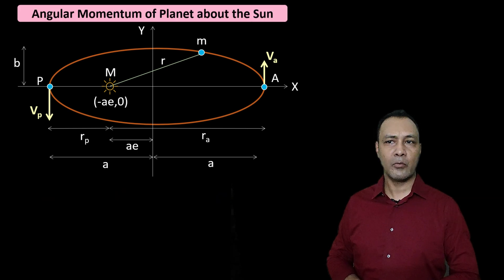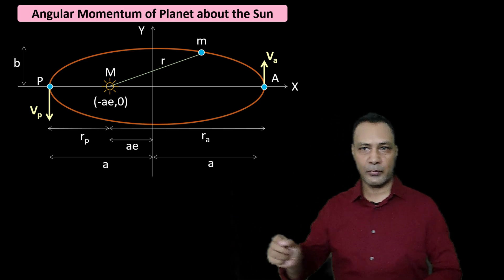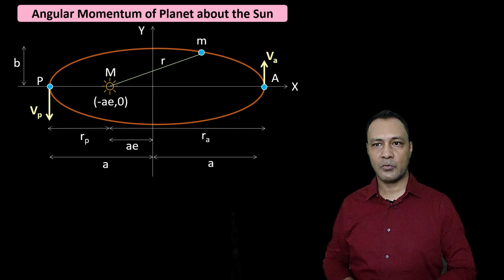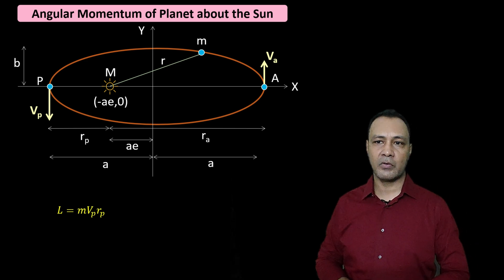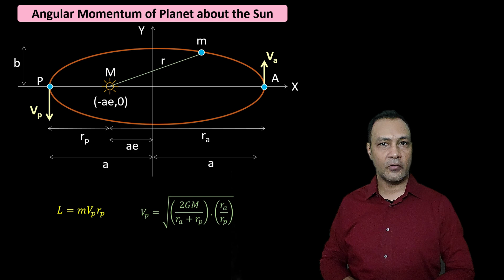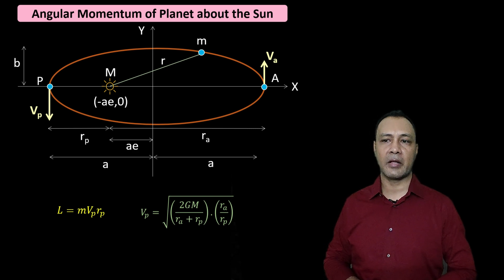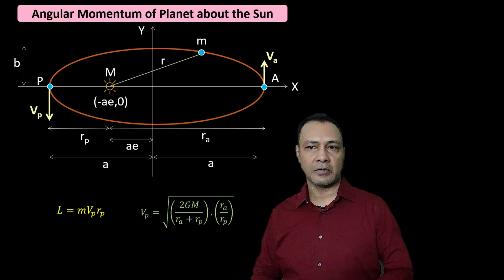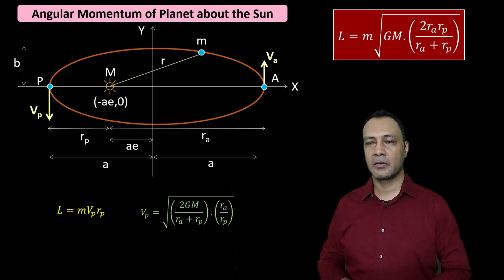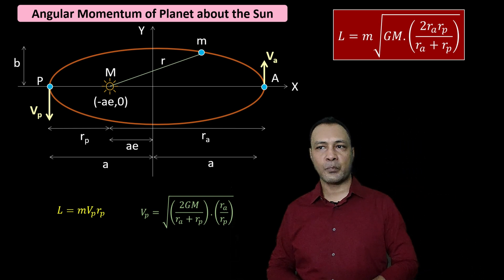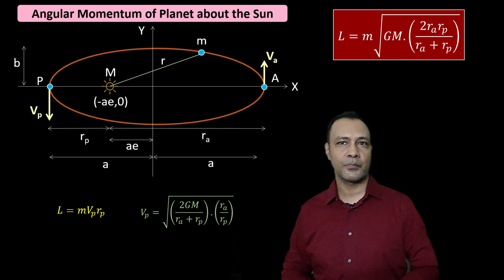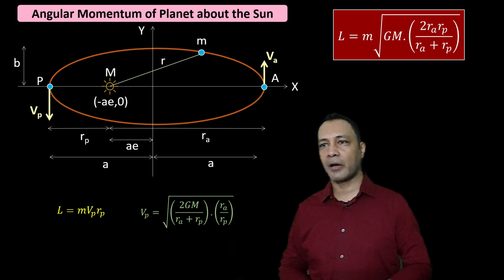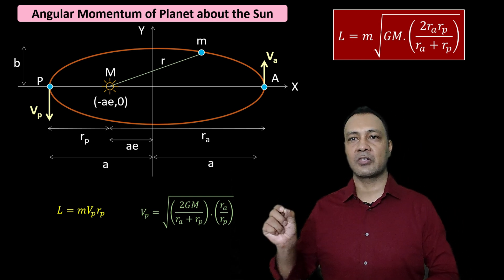Now, angular momentum of the planet about the Sun. Since angular momentum is conserved, I choose the perihelion point where L = m·Vp·Rp. Substituting the expression for Vp, we get L = m × √(2GM·Ra·Rp / (Ra + Rp)). The quantity 2·Ra·Rp / (Ra + Rp) inside the square root is the harmonic mean of Ra and Rp, so we can write L = m × √(GM × R_avg), where R_avg is that harmonic mean.